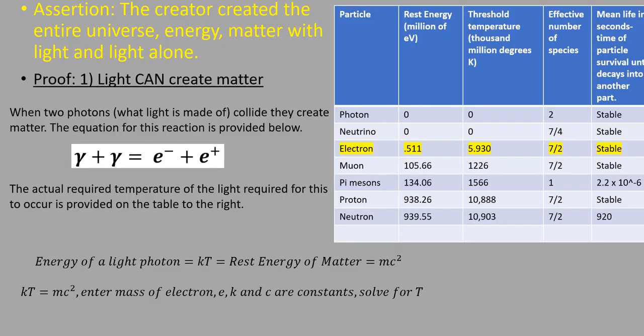Assertion: The creator created the entire universe, energy, and matter with light and light alone. Proof: Light can create matter. When two photons, what light is made of, collide, they create matter. The equation for this reaction is provided right here.